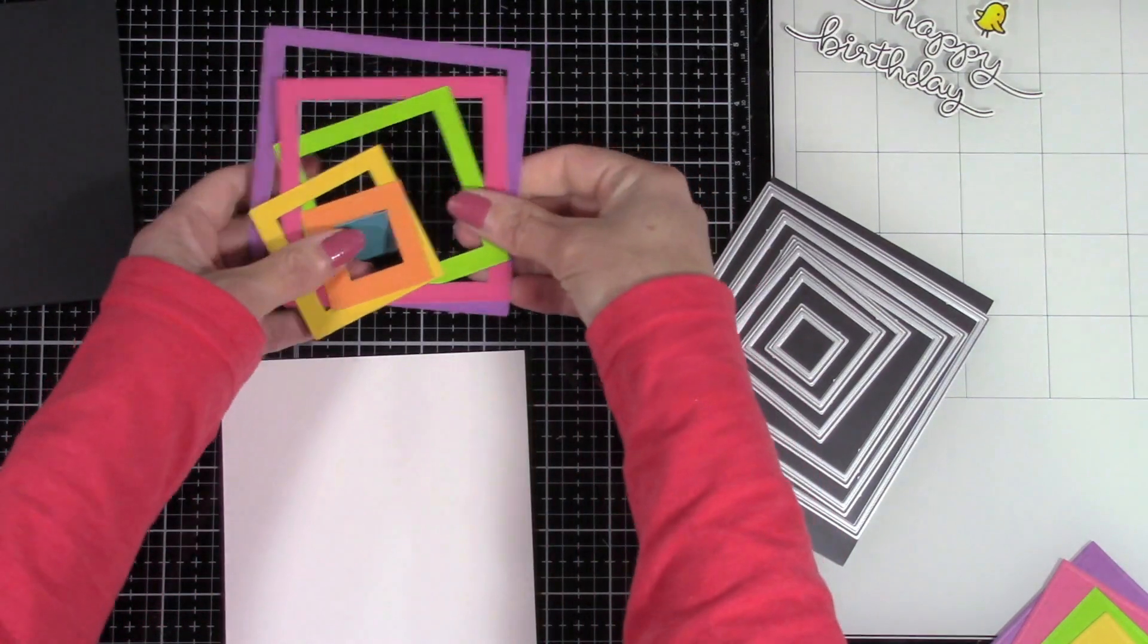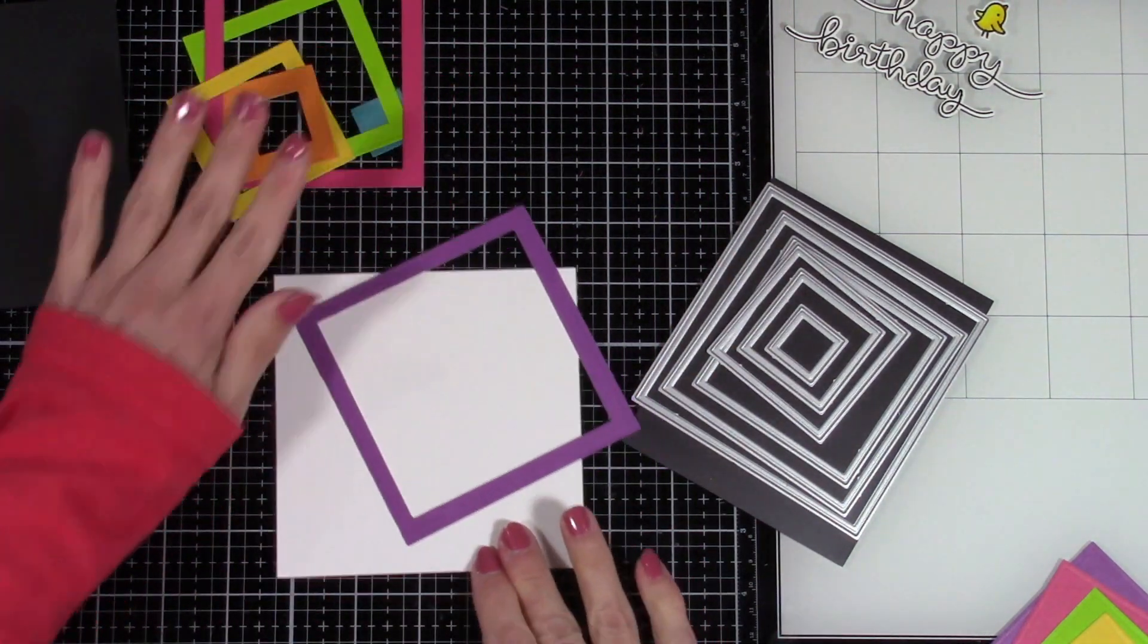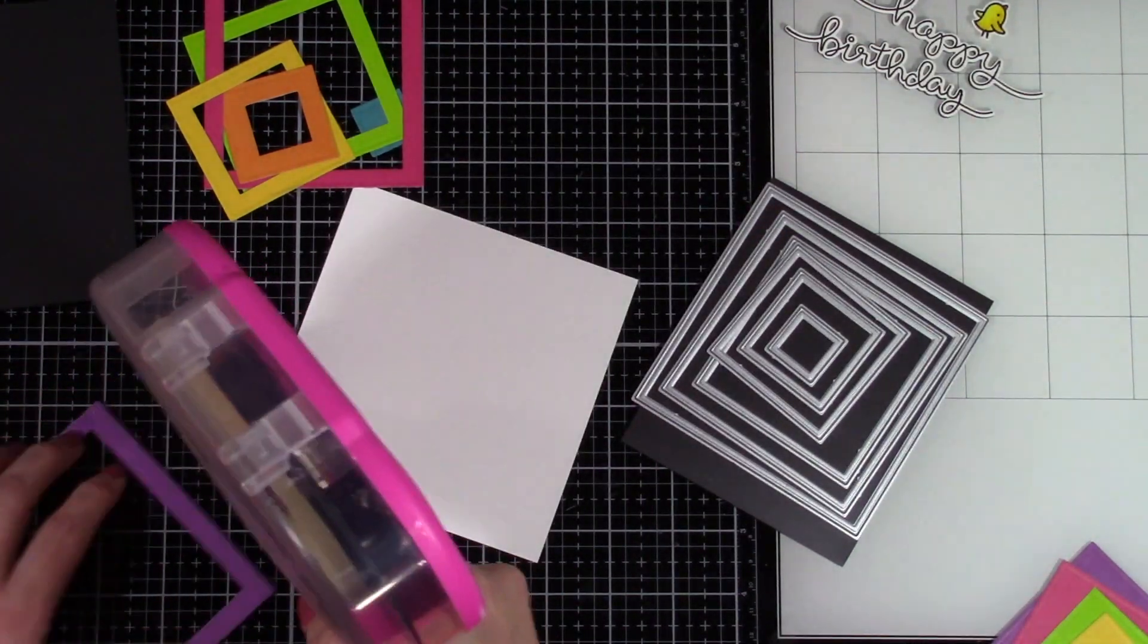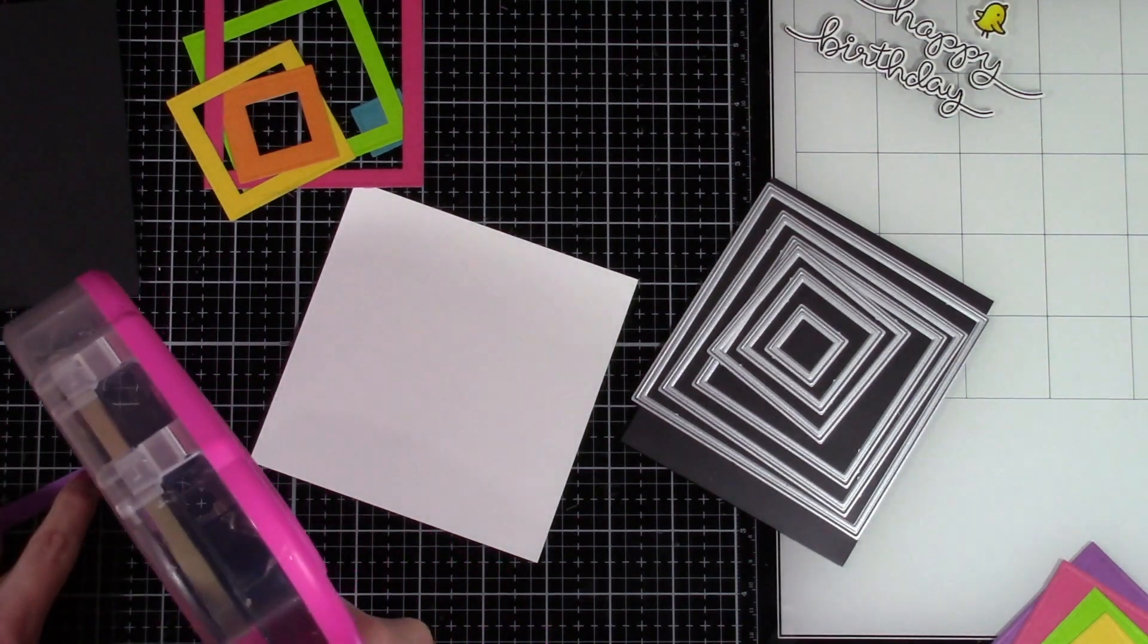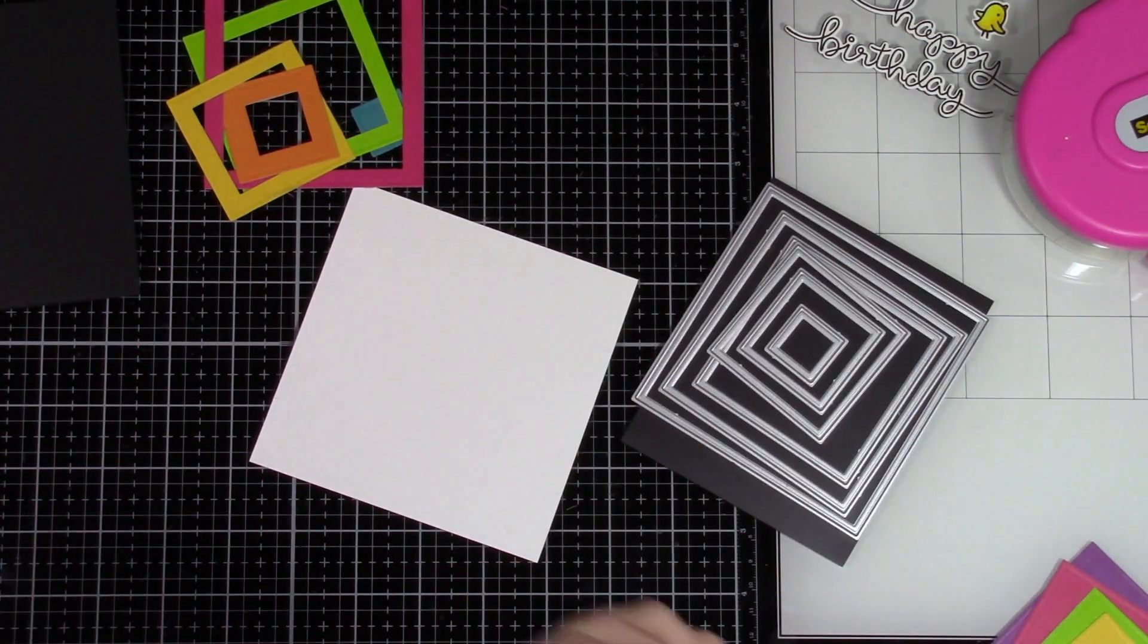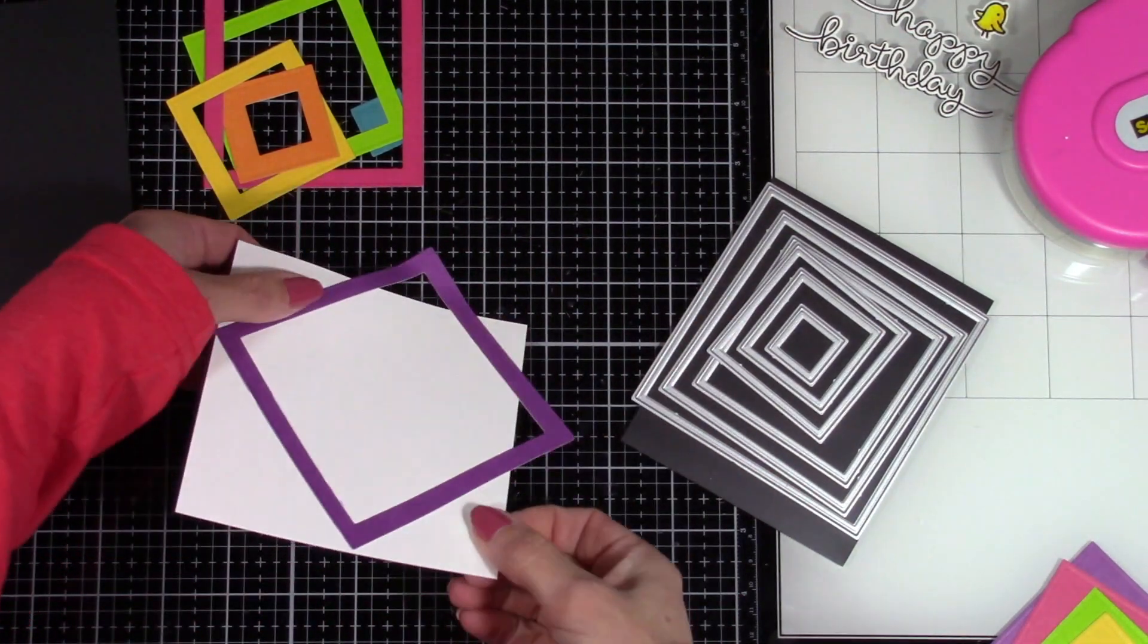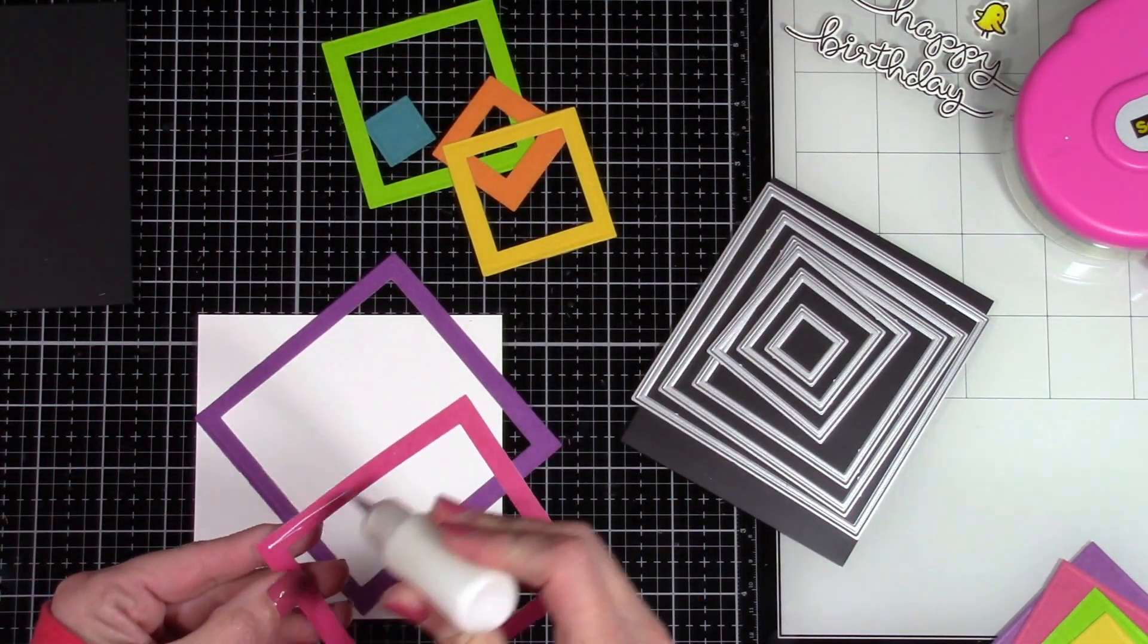And we're going to do it exactly the same way as we did the heart. So I won't make you sit through all of that. But then this time I'm going to kind of place it a little off-center on my card panel here. And I will once again inlay this. This one's a little more in line with what Laura Basson did on hers with the kind of off-centered, layered-up one.